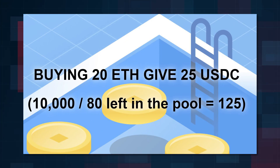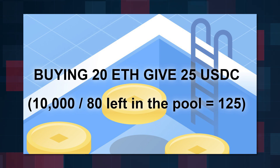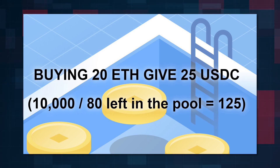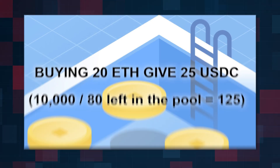If a user buys 20 Ethereum, there will be 80 Ethereum left in the pool. To maintain the constant product of 10,000, the pool needs to be replenished with 25 USDC. In this case, to buy one Ethereum, the user will need to deposit 1.25 USDC into the pool, which significantly deviates from the spot price. Such slippage makes the trade unprofitable for the trader.